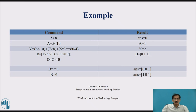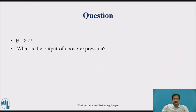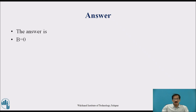Similarly, the next expression: y is equal to 2. Then b is equal to an array — it will give 0, 1, 1. Then c is equal to b, and b minus c will give the result. Here is a question: b is equal to 8 less than 7 — what is the output? The answer is 0, because 8 is greater than 7, so the condition '8 less than 7' is false, and the output in logical form is 0.